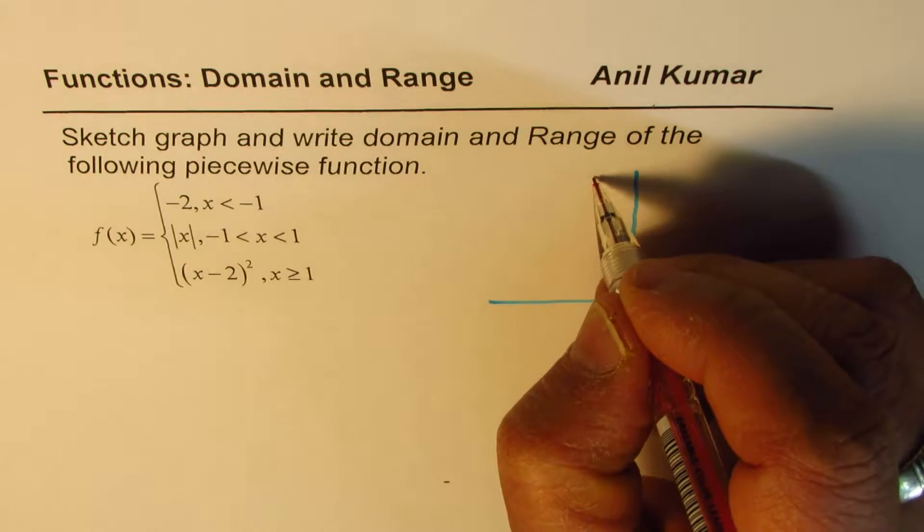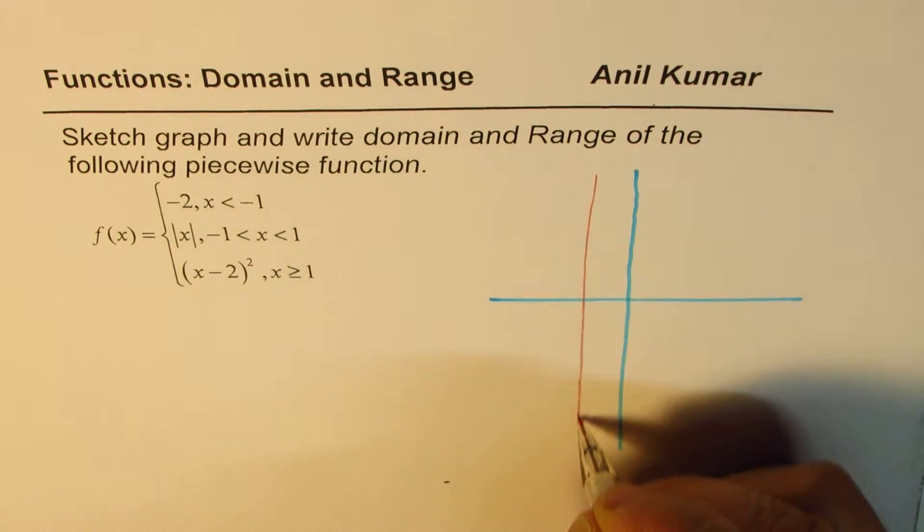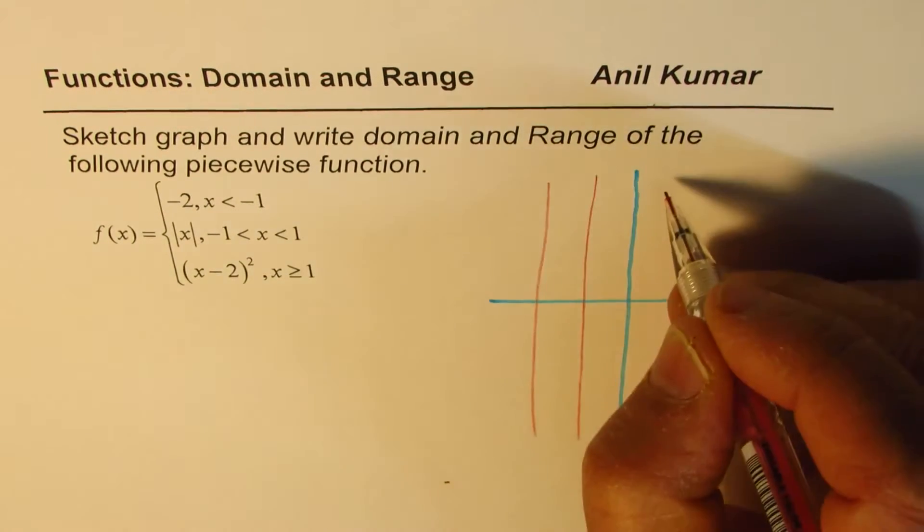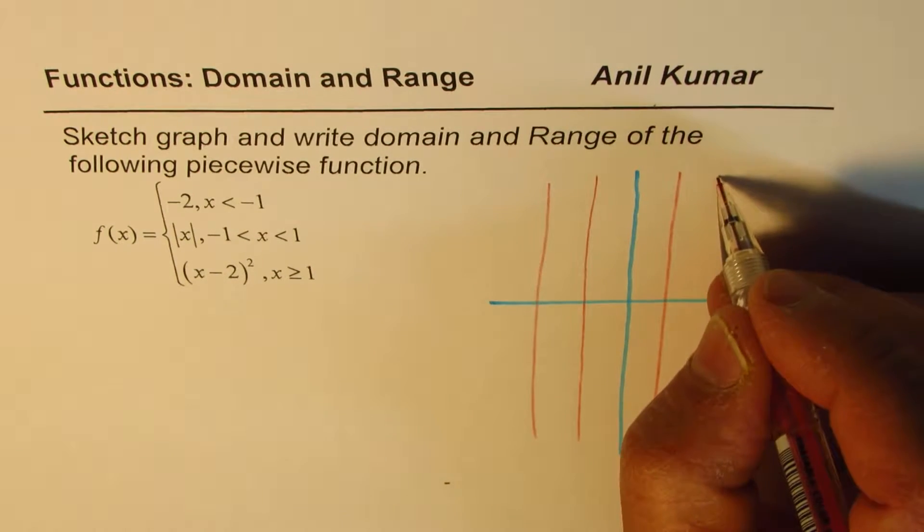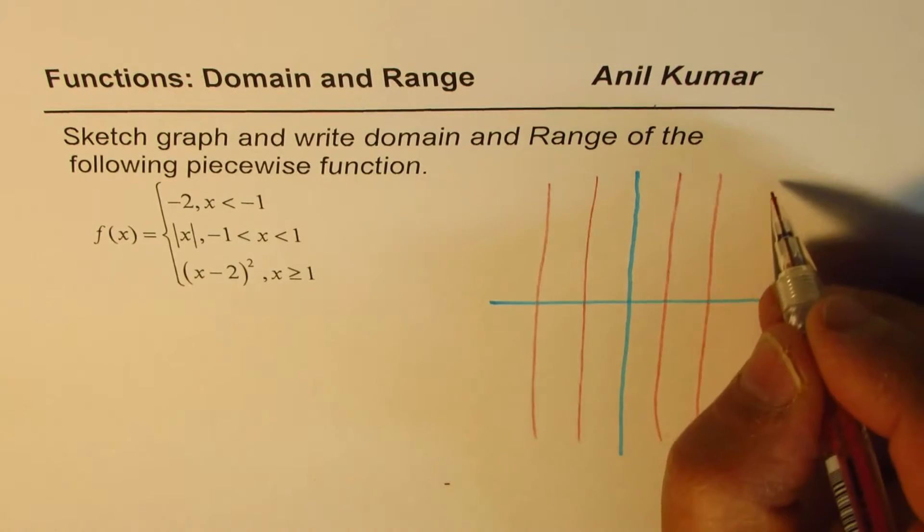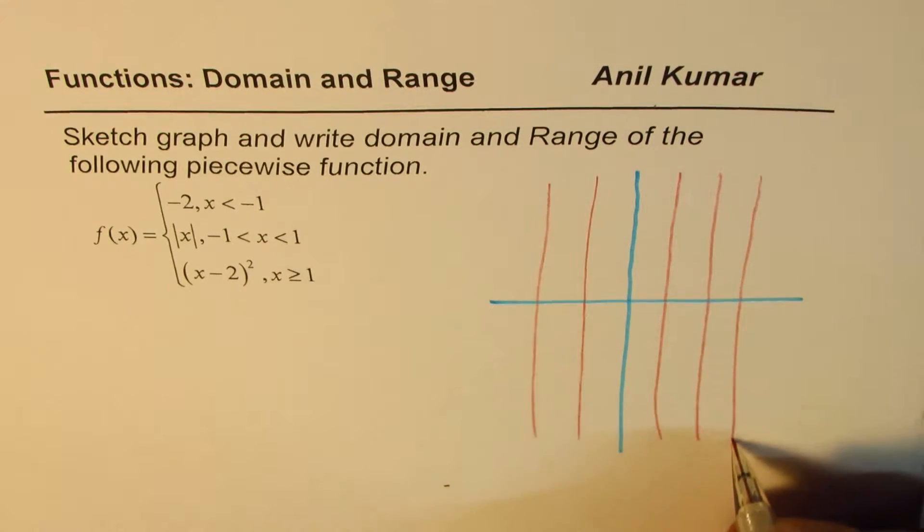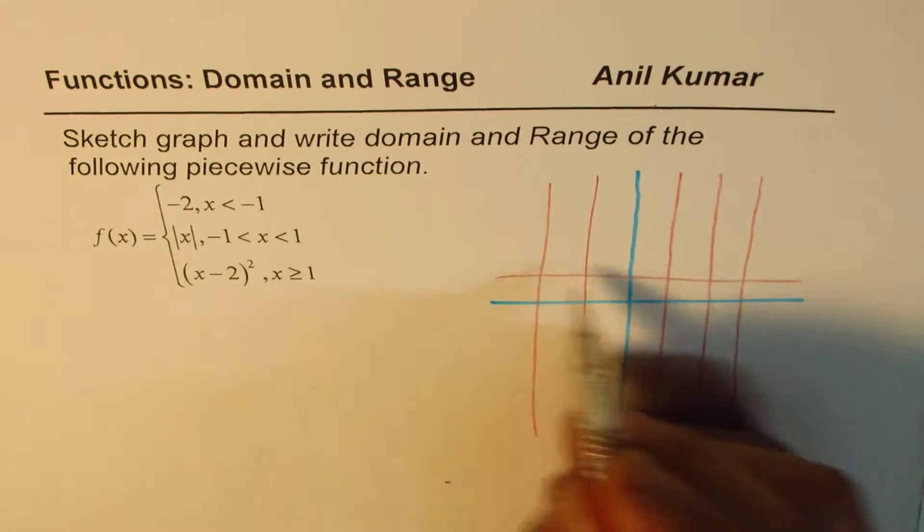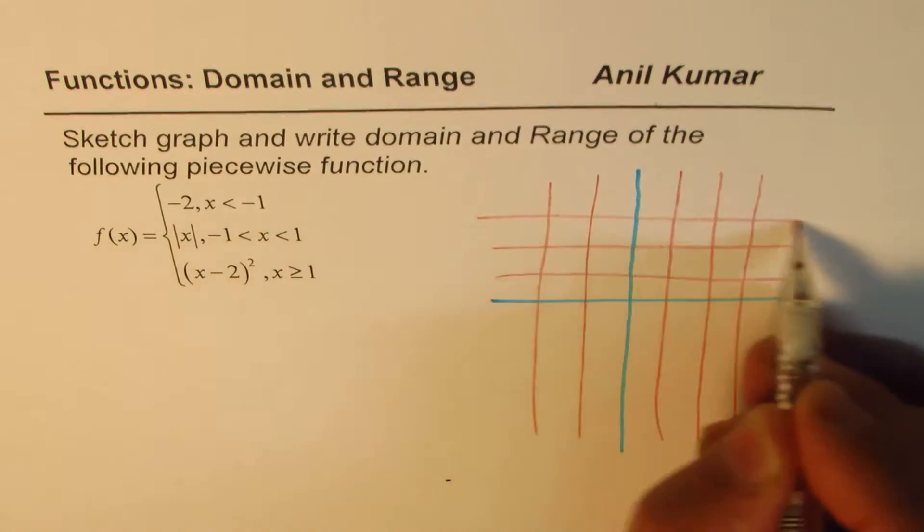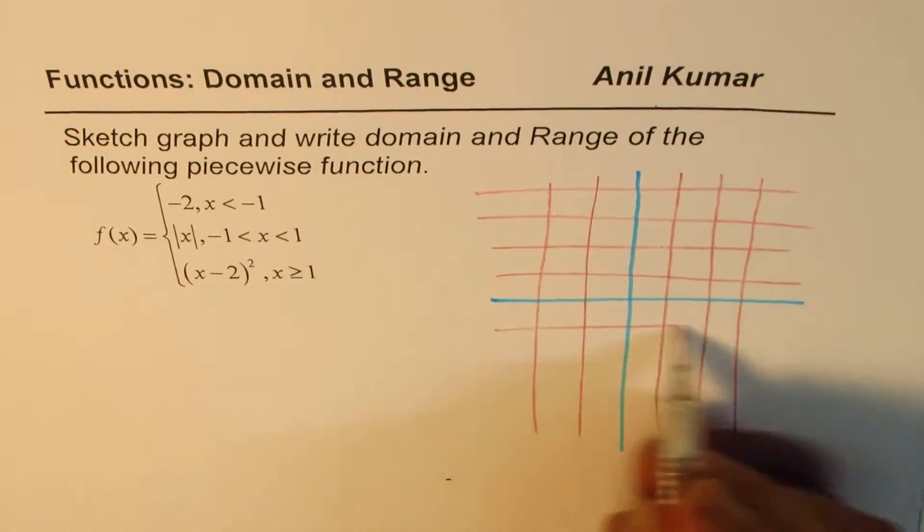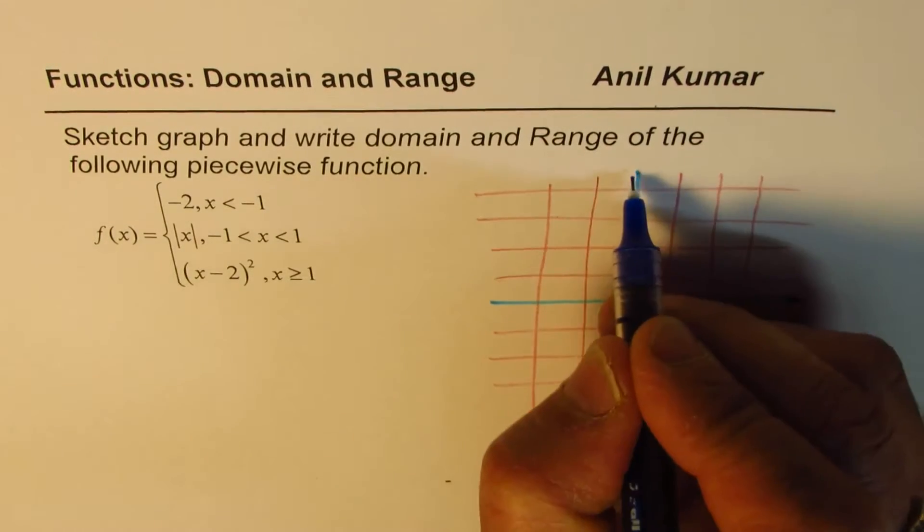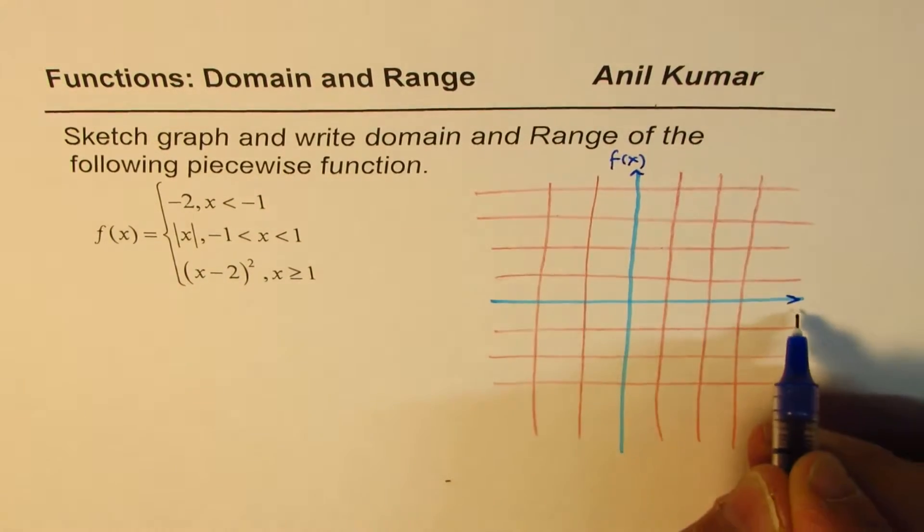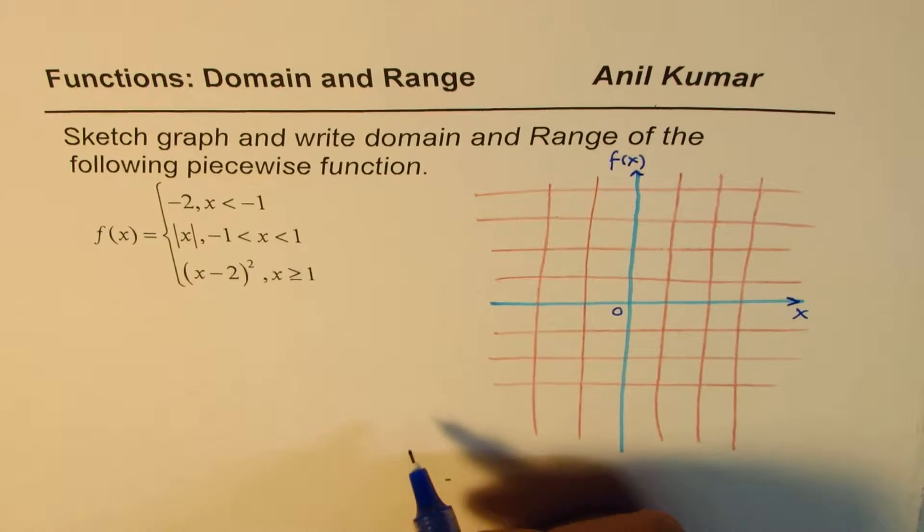So let me just make a grid here. I'll just roughly draw a few lines. So this will help you to sketch a graph. Assume these are perfectly straight lines and then we'll sketch a neat graph. So we have f of x on the y-axis, x here, 0 there.